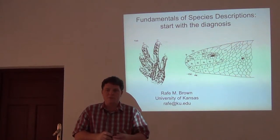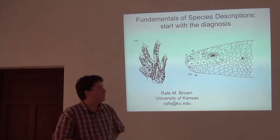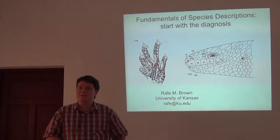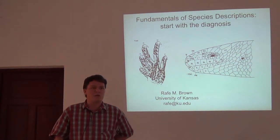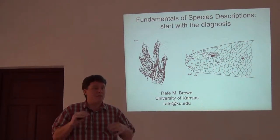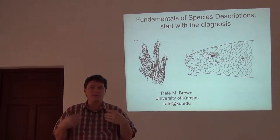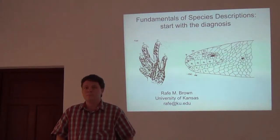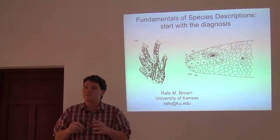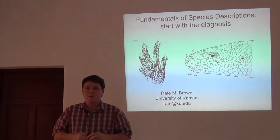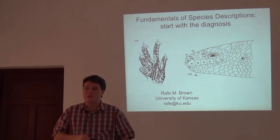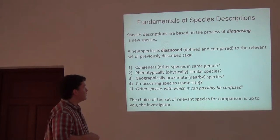All right, thanks everyone. We're almost there with our morning session. I want to talk a little bit more about the fundamentals of species descriptions. I want to emphasize again that it all starts with the diagnosis, and if you can master this part, then basically everything else will flow. If you can get the diagnosis and the definition of that universe of relevant species to which you'll compare your putative new species, everything else can flow in terms of writing the manuscript.